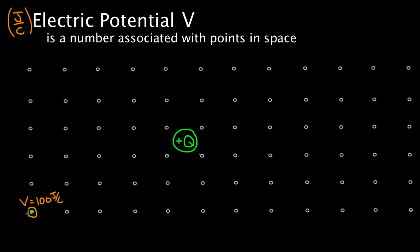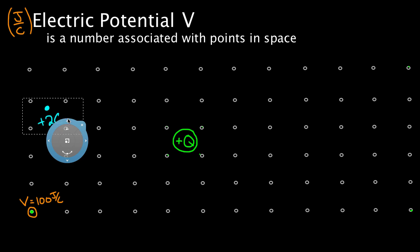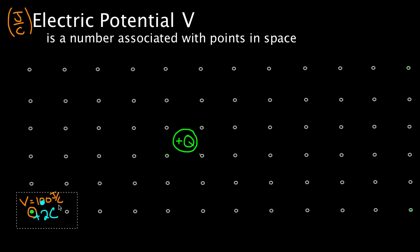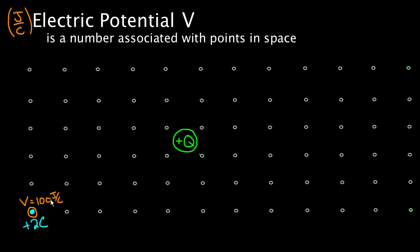What that means is, remember there's nothing there. But if we happened to take a positive two-coulomb charge and put it there at that empty point in space — before we put it there, the V value was 100. Why do we care about this 100 value? Because it's 100 joules per coulomb. So if it's 100 joules per coulomb and I stick two coulombs there, how many joules of energy do you think it's going to have? It'll have 200. That's the key — that's why we care about electric potential, because it lets us find electric potential energy.